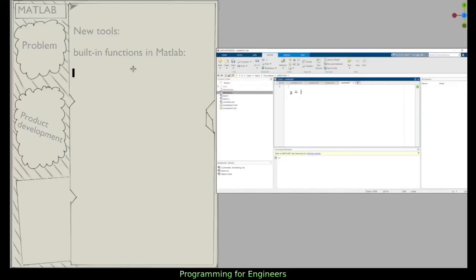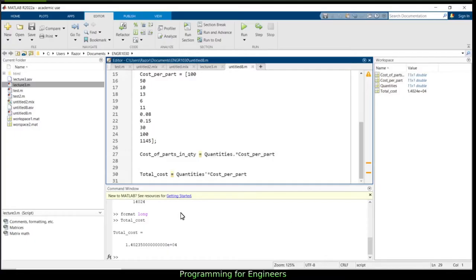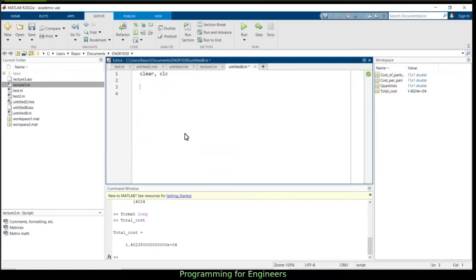All right, for this next problem we're going to need a new tool in the MATLAB toolset. So that tool is a built-in function in MATLAB, and we'll just go through a few real quick and introduce you to them. If I go over to MATLAB, MATLAB has built-in functions for the use of mathematical operations, and the ones we're going to need here are the trigonometric identities.